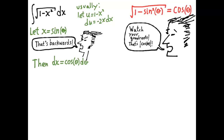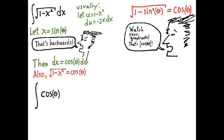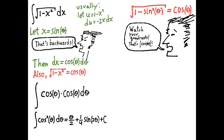So dx equals cosine of theta dθ. And here's the really great part where we use the identity: the square root of 1 minus x squared equals cosine of theta. Taking these two pieces and substituting them into the original integral, the square root of 1 minus x squared times dx becomes the integral of cosine squared theta dθ, which we already know how to integrate because we've studied trigonometric integrals.